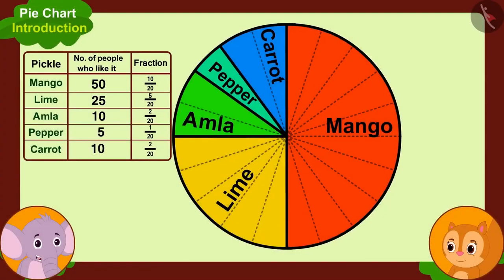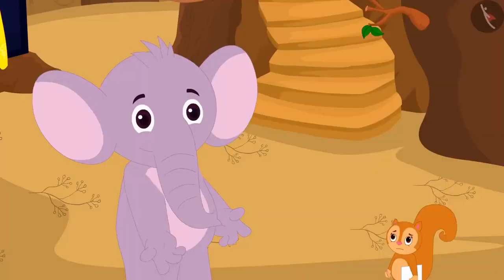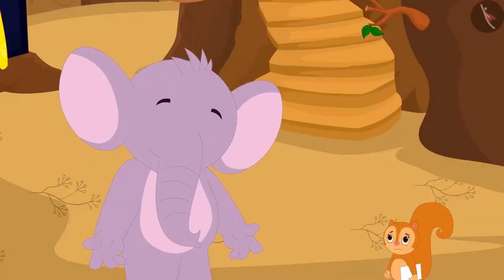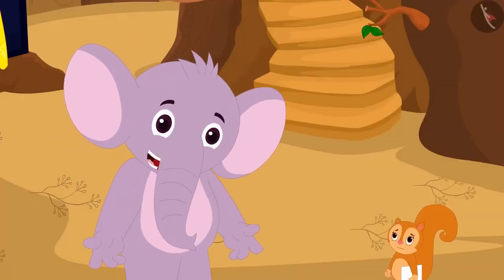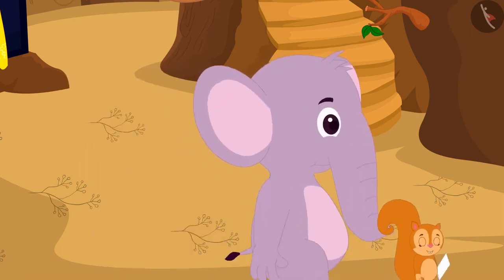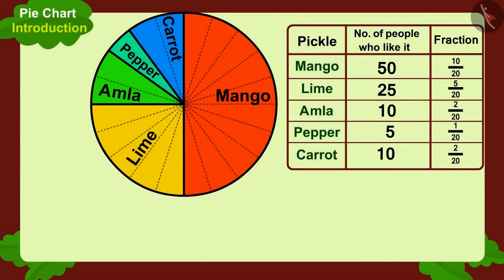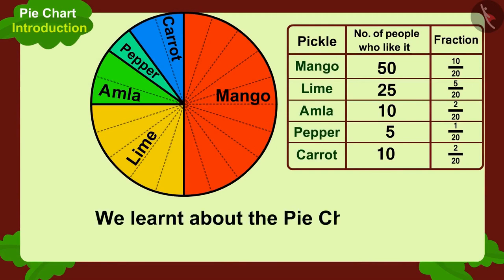That's right. We have to start selling mango pickle first. Let us eat something now — I am very hungry too. Appu and Chanda now went to eat chapatis. Children, in this video we learned about the pie chart. In the next video, we will learn more about it through some interesting examples.